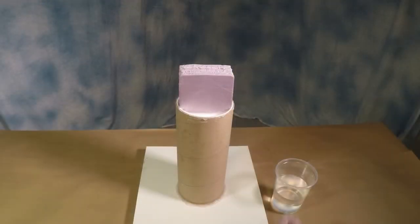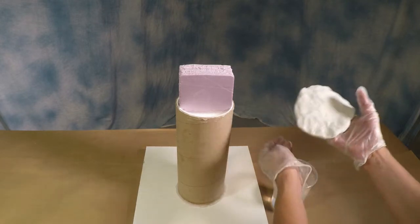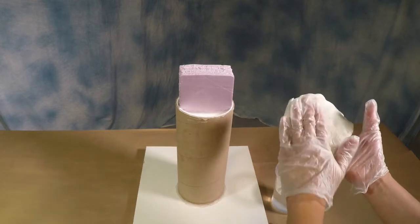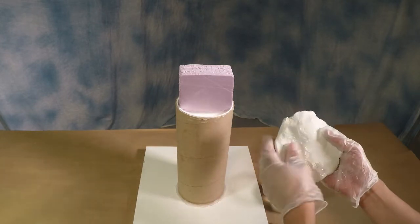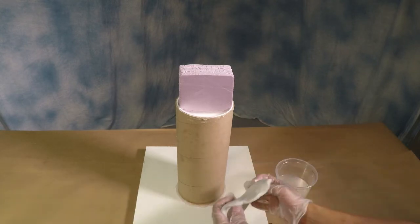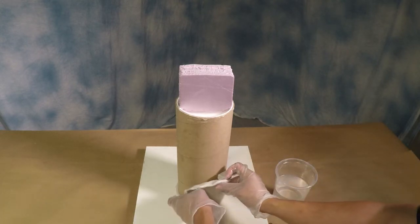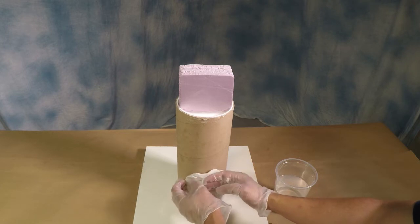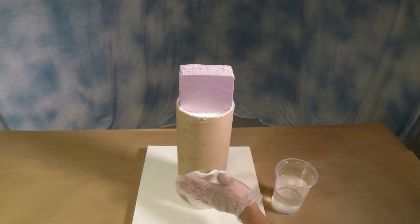Now I'm going to take a little bit of water and I'm going to apply that to the surface of the putty. This will allow me to adhere the putty to a vertical surface very easily. So I'm going to use that to press the putty against the surface of the mailing tube.